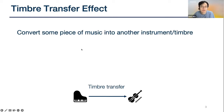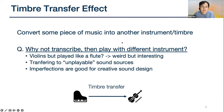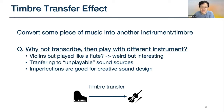A timbre transfer effect is an effect that converts some piece of music into another — that of another instrument or timbre. An obvious question would be: why not just transcribe the music and then play that score with a different instrument? But the difference is that we can imagine violins played like a flute — not just the same score, but some styles from the original violin that are carried over to the flute, producing sounds with some weird effects that you might find interesting.